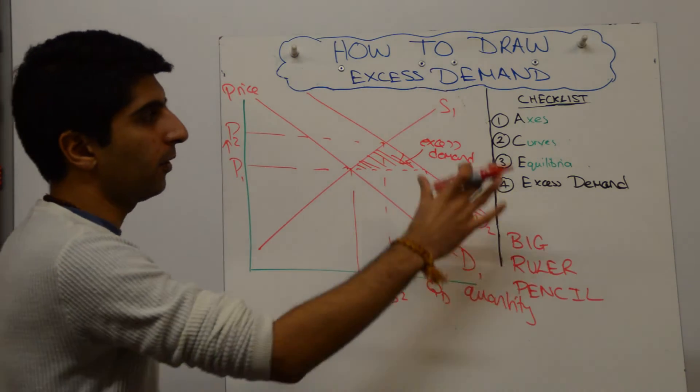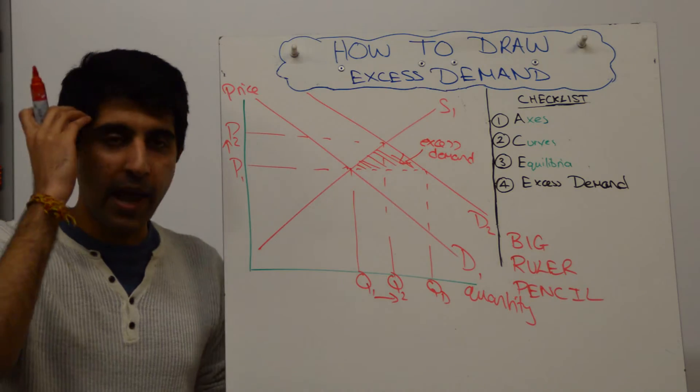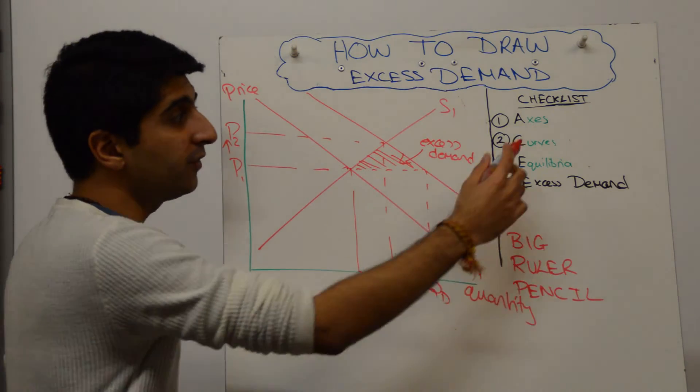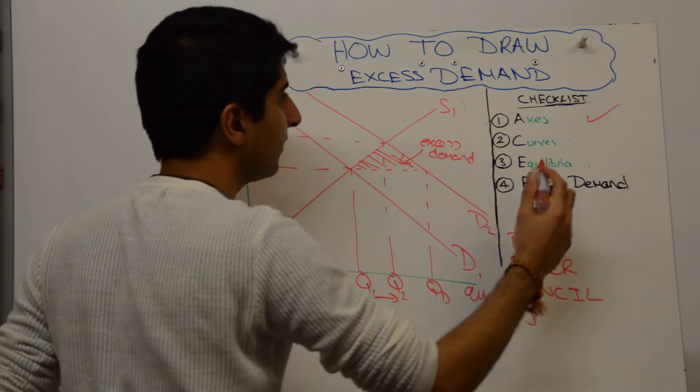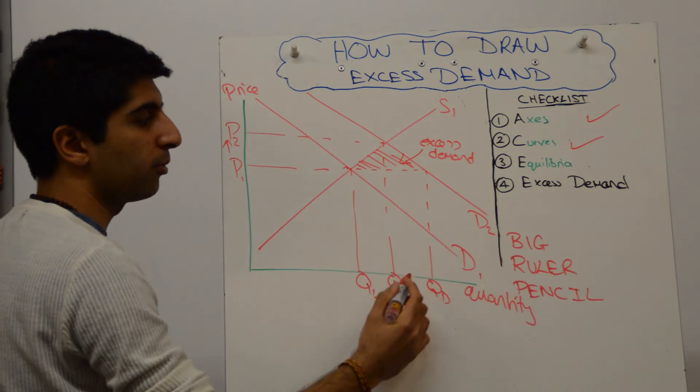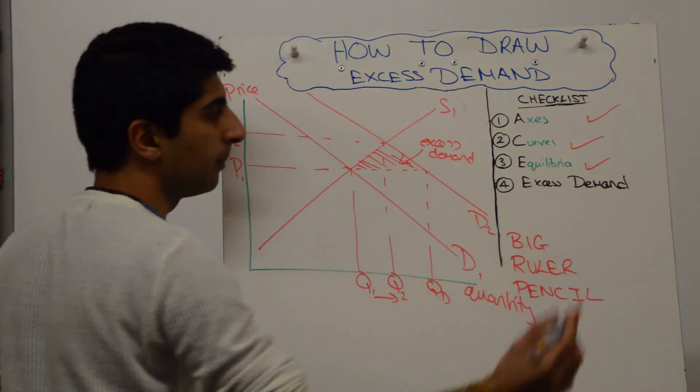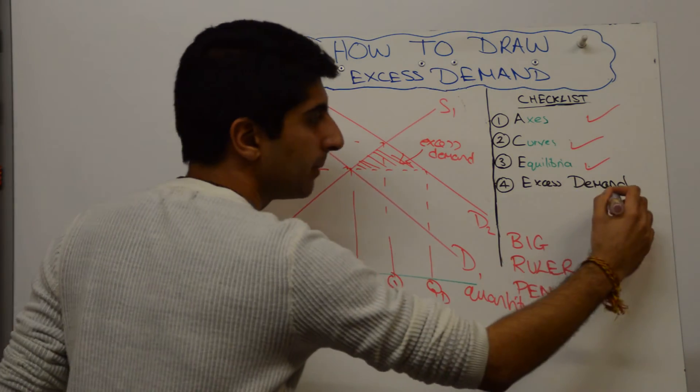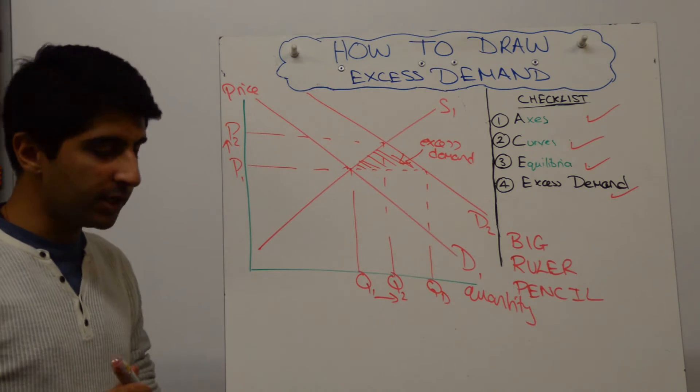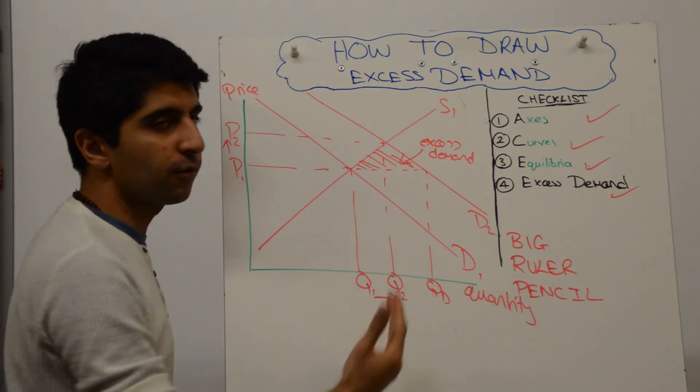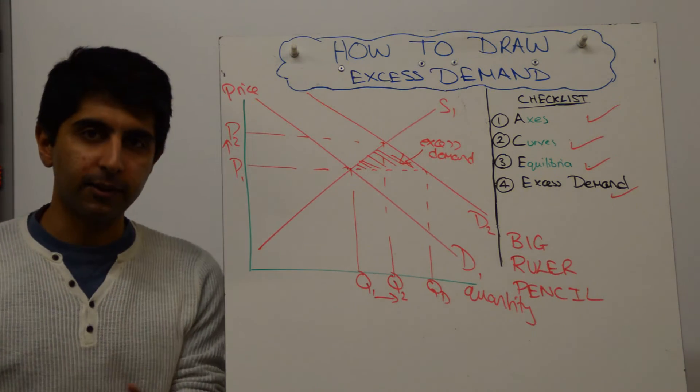So that's one way of doing it. Do we fulfill what we have in our head when it comes to our checklist? We've done all of these things. We've labeled the axis price and quantity, we've labeled our curves appropriately, we've labeled our equilibria, and we've shown and labeled the excess demand. So we've done everything we need to do. So by shifting demand to the right, initially at the same price, we have an excess demand.